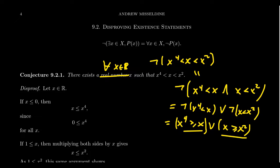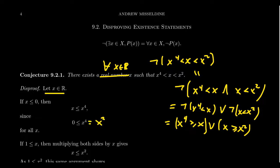We proceed by cases. Let x be a real number. If x is less than or equal to zero, then x is less than or equal to its fourth power, because the fourth power of any real number is non-negative. It's important to remember that a fourth power is just a square of a square, and for real numbers the square is always non-negative. So the fourth power is non-negative, and if x is less than or equal to zero, that means x is less than or equal to x to the fourth. So the first situation holds in this case.